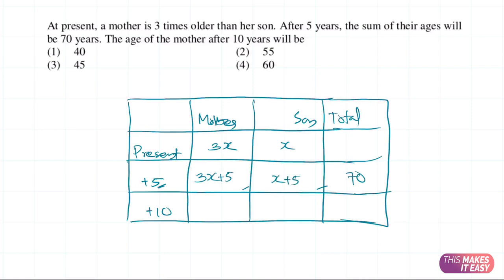After five years the son's age will be x plus 5. The question asks for the age of the mother after 10 years, which will be 3x plus 10. So if we know x we can easily answer the question. We don't know x yet, so we have to solve for it. We know that 3x plus 5 plus x plus 5 equals 70, so we can write that as an equation.